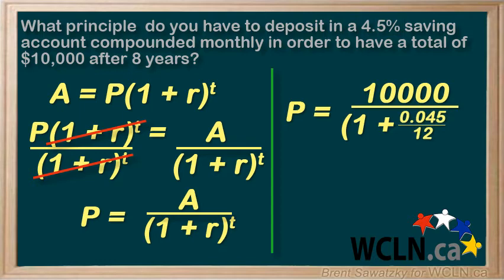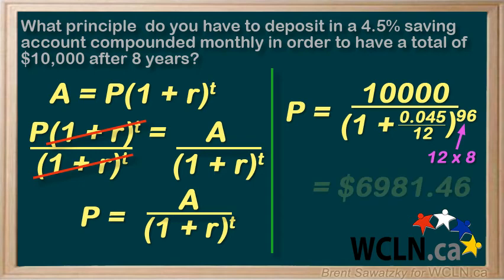And to the power of — compounded monthly again — so 12 times 8 years equals 96. We plug all that into our calculator for a final result of six thousand nine hundred and eighty-one dollars and forty-six cents.